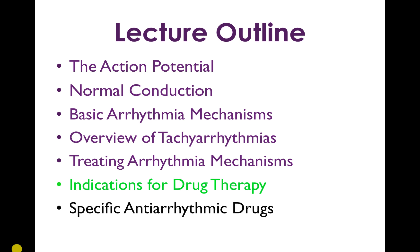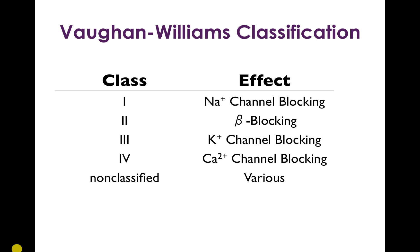We just talked about indications for drug therapy and now we're going to talk about some of the specific antiarrhythmic drugs. The way these antiarrhythmic drugs are classified is by their effect on the various channels or elements that mediate their effect, and this classification is known as the Vaughan Williams classification.